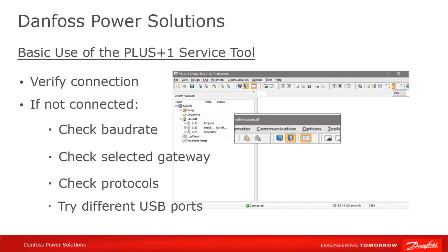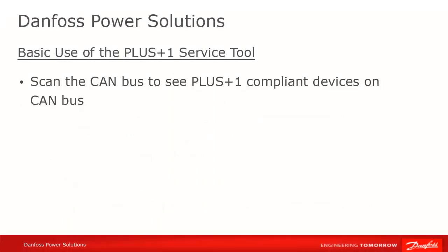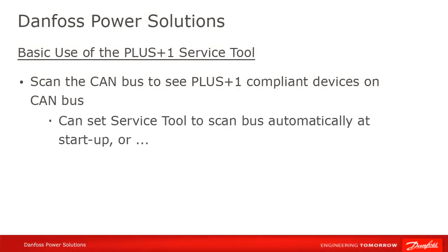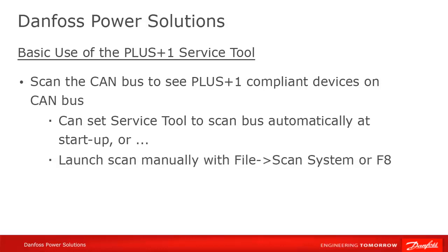You might also want to try different ports on your desktop or laptop, and try to avoid using a docking station port. Once you're connected, the system should immediately scan and display a list of any Plus One devices that it finds on the CAN bus at startup. You can also initiate a scan by pressing F8.